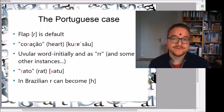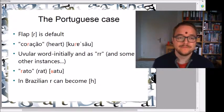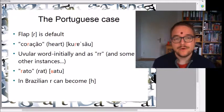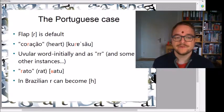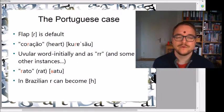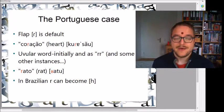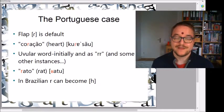Another interesting language is Portuguese, spoken both in Portugal and in Brazil. In Portuguese the normal R sound is usually a flap, for example in the word for heart. But in Portugal you also have the uvular version, usually word-initially or when written with two R's — like 'carro' meaning car, or 'rato' meaning rat. In Brazilian Portuguese, an R can even become an H sound, so 'rato' becomes 'hatu'.